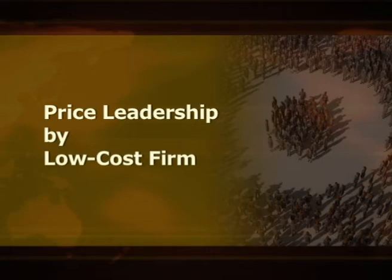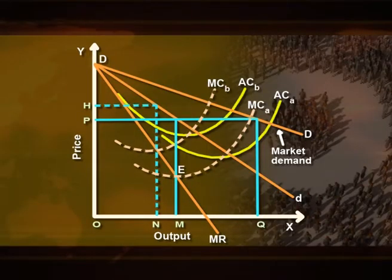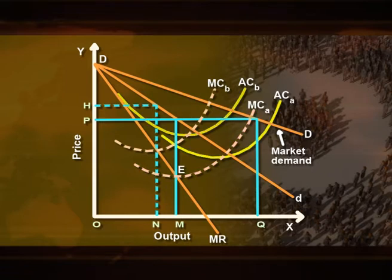Price-output determination under price leadership by a low-cost firm assumes: first, the cost of production of one firm is lower than that of the other; second, both firms produce a homogeneous product; third, each firm has an equal share in the market. Each firm faces a demand curve dd which is half of the total market demand curve. MR is the marginal revenue curve of each firm. ACA and MCA are the average and marginal cost curves of firm A, and ACB and MCB are the average and marginal cost curves of firm B. MCA and ACA of firm A lie below MCB and ACB of firm B because the cost of production of firm A is assumed to be lower than firm B.